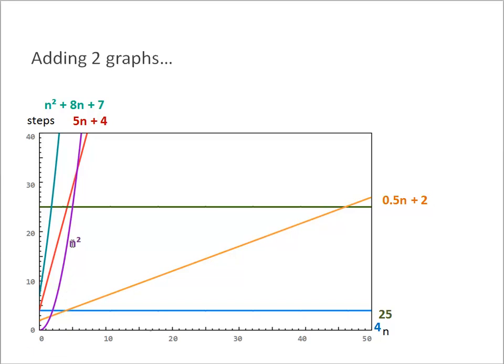I'm adding two more graphs. The purple one requires N squared steps. That could, for example, belong to a method with a nested loop where both control variables depend on the input size N. The teal colored graph requires N squared plus 8N plus 7 steps. This could, for example, belong to a method that includes a nested loop and a simple loop.